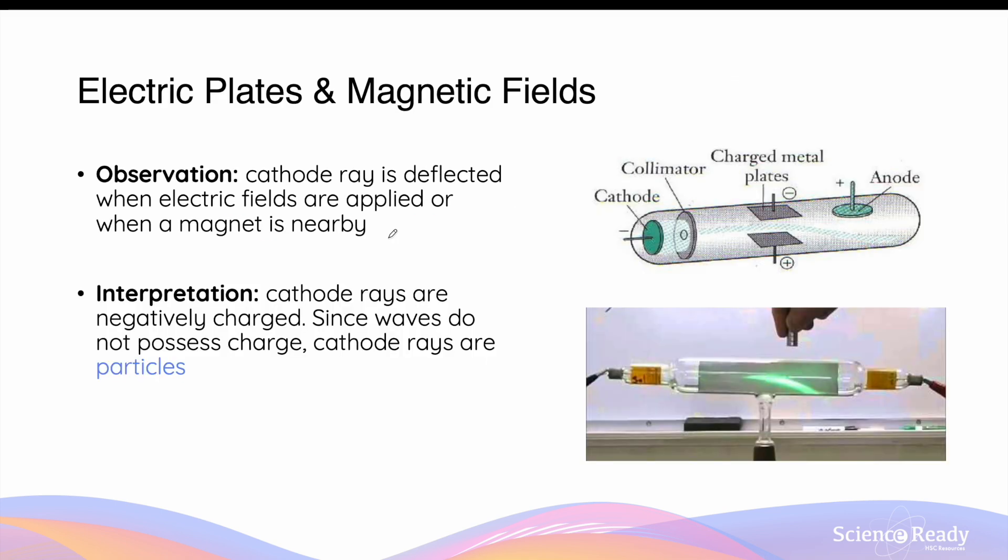Experiments using the fluorescent plates were investigated using electric plates and magnetic fields. They observed that the cathode ray is deflected when the electric fields are applied or when a magnet is placed nearby. In the top diagram, two charged plates are placed at the top and bottom of the cathode ray tube, the bottom plate being positive, and the cathode ray trajectory is observed to be deflected towards the bottom side which is the positive plate.